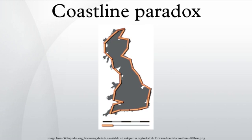More concretely, the length of the coastline depends on the method used to measure it. Since a land mass has features at all scales — from hundreds of kilometers in size to tiny fractions of a millimeter and below — there is no obvious size of the smallest feature that should be measured around, and hence no single well-defined perimeter to the land mass. Various approximations exist when specific assumptions are made about minimum feature size.